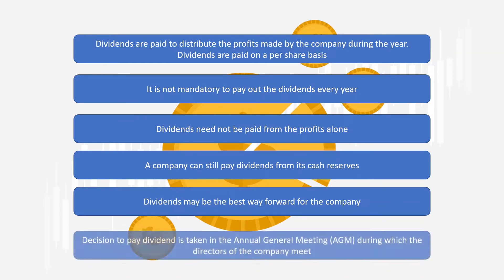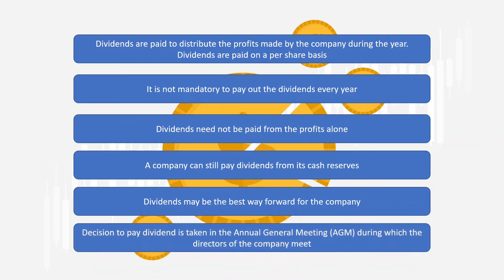The decision to pay dividend is taken in the annual general meeting during which the directors of the company meet. The dividends are not paid right after the announcement, because the shares are traded throughout the year and it would be difficult to identify who gets the dividend and who doesn't.